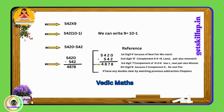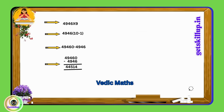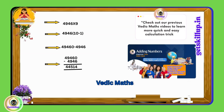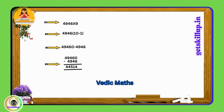This approach simplifies multiplication with 9s by transforming it into a combination of multiplication by 10 and subtraction, making the calculation more manageable. Let us take another example: 4946 multiplied by 9. We add a 0 to the right of the number, giving 49460, and then subtract the original number 4946 from this result. So, 49460 minus 4946 results in 44,514.